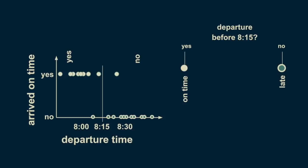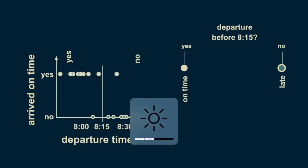There are two branches, a yes and a no. For consistency, we'll keep all of our yeses on the left. Placing this decision boundary divides the data up into two groups, and although there are some stragglers and exceptions, the overall pattern is captured by placing this decision boundary at 8:15. If you depart before 8:15, you can be reasonably sure of getting to work on time. If you depart after 8:15, you can be reasonably sure of being late. This is the simplest decision tree possible — a single branch.